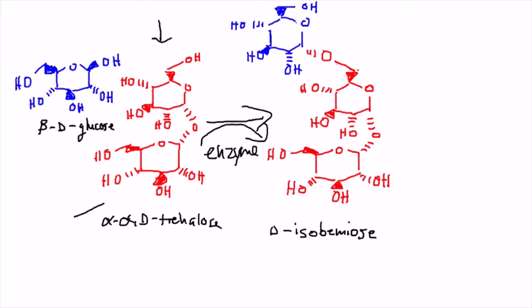Notice the first part of this ether linkage is below the plane of the ring, compared to the C5 functional group. They're trans to one another, making it an alpha linkage. Now, let's look at the other side of this glycosidic linkage. It has the same orientation, the same trans relationship to the C5 methoxy group.